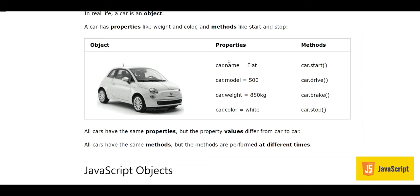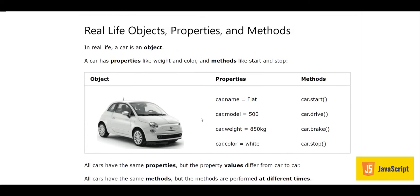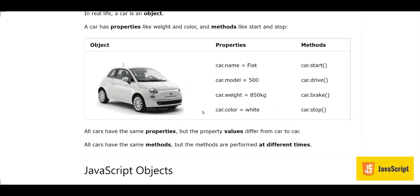All cars have the same properties, but the property values differ from car to car. The brand name can be Fiat or Toyota or any other. Similarly, different cars have different models, weight, and color. All cars have the same methods, but the methods are performed at different times. So this is an example of a real-life object — every object has some properties and methods.